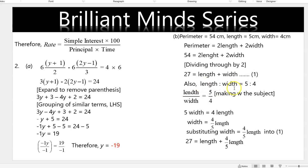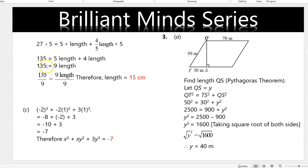The ratio of length to width equals 5 to 4. Making W the subject gives width equals 4 divided by 5 times length. Substituting into equation 1: 27 equals length plus (4/5)length. After simplifying we get 135 equals 9 times length. Dividing both sides by 9 gives length equals 15 centimeters.